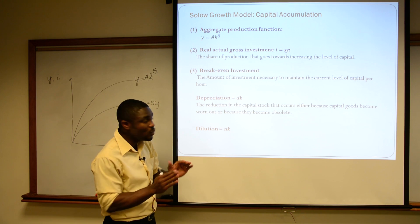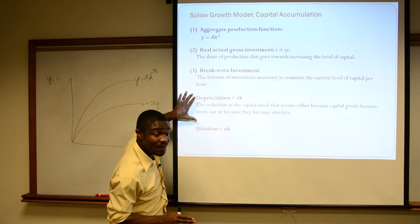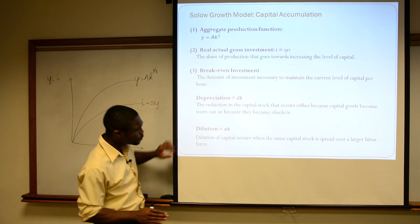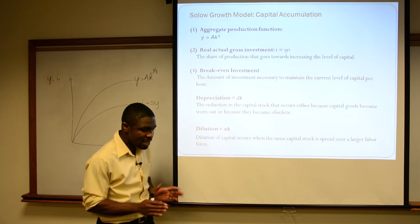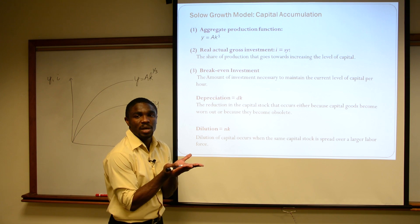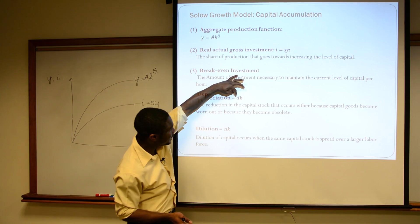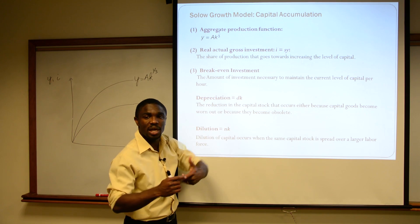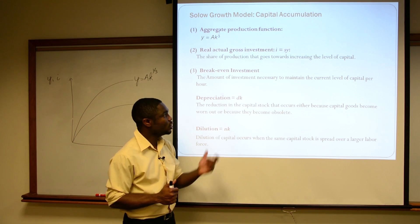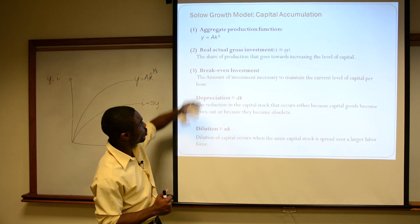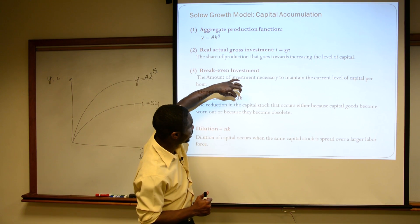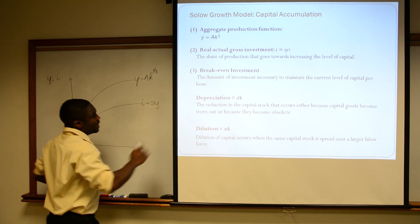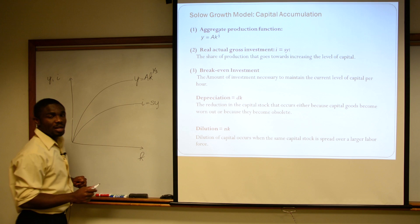We need to account for the fact that some of the capital will be depreciating, and secondly, we need to account for the fact that we're going to have population growth. So our D here is just our depreciation rate, and N is our population growth rate.